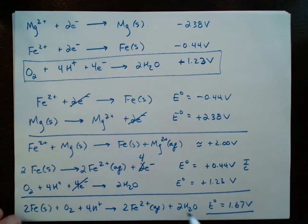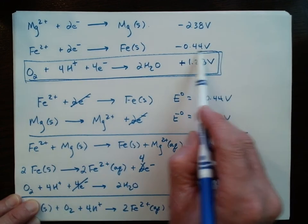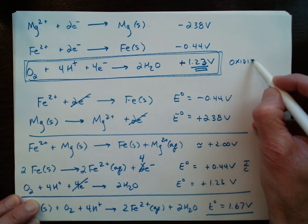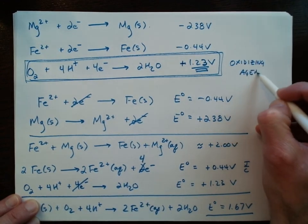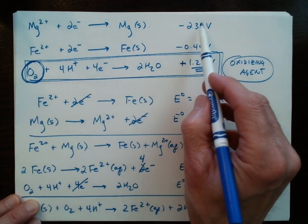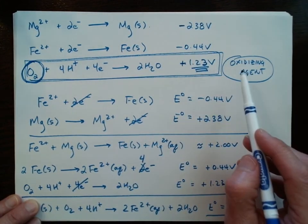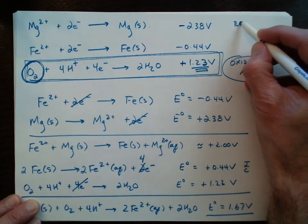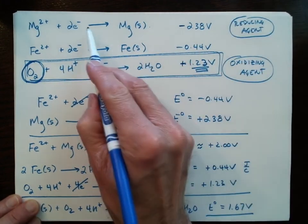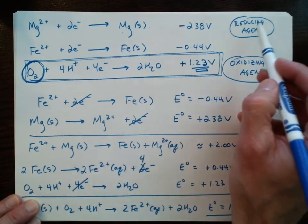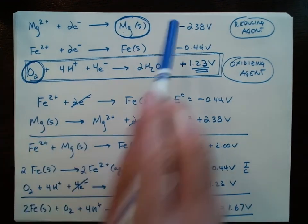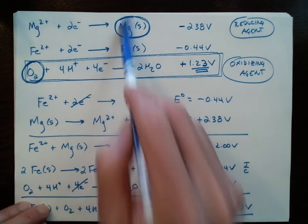What we want to remember is that things that are easily reduced — with a positive reduction potential — are going to be good oxidizing agents, and the oxidizing agent is going to show up on the reactant side of the half reaction. Things with very negative reduction potentials are going to be oxidized easily, so those are going to be good reducing agents. Because we're flipping the reaction to oxidize it, your reducing agent is going to show up on the product side of a reduction half reaction. When you flip it, then you can see the reducing agent as such.